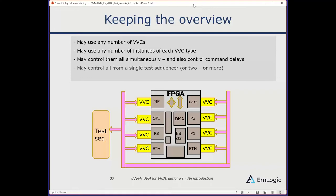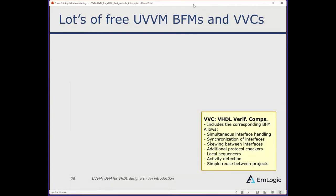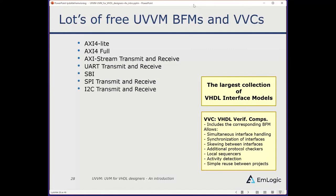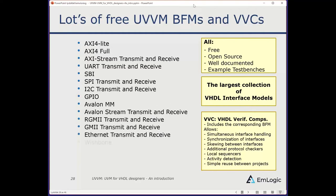You can control any number of verification components — 50 if you like, or 10 of the same type — all simultaneously from a single sequencer. You get a total overview by looking at one single file, which is extremely important. Compare this to software where three different cores operating on the same functionality makes synchronization very difficult — far worse with 10 or 15 interfaces. UVVM has the largest collection of HDL interface models available: AXI Lite, SPI, I2C, Avalon, AXI Stream, Full AXI, and more — all free, open source, well documented, with example testbenches for every one.